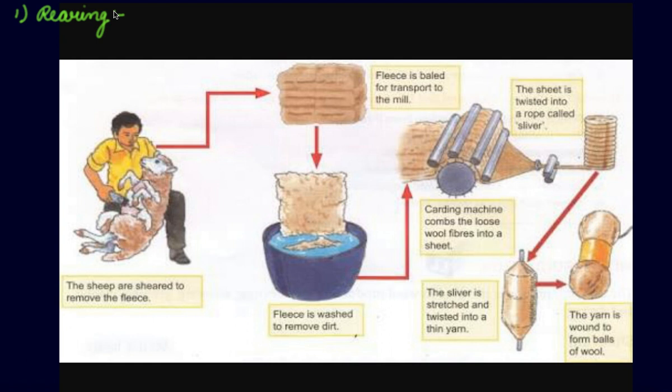Sheep eat grass and leaves. Reared sheep are also fed on a mixture of pulses, corn, jowar, oil cakes, and minerals. In winter, they are kept indoors and fed on dry food like leaves and grains. So first of all, you keep the sheep, you buy them and keep on feeding them.